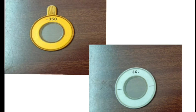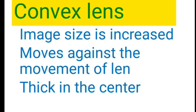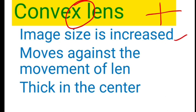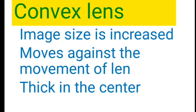The next step is to identify whether it is a concave lens or the convex lens. I have put convex first because it is easy to remember with the letter X. If you just tilt the letter X, it becomes almost a plus sign. The image is increased in size and it is thick in the center. As you observe the letter X, it is like opposite direction, so the image moves in the opposite direction.